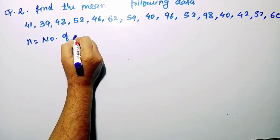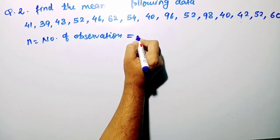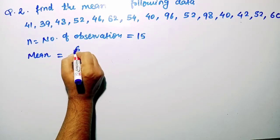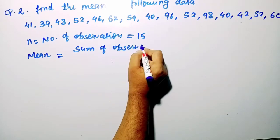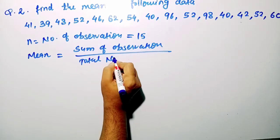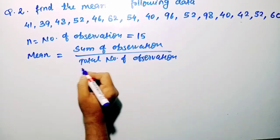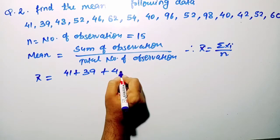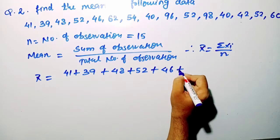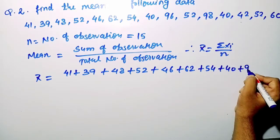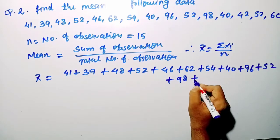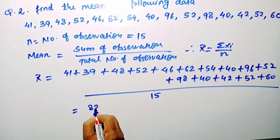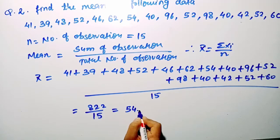For the next question, the total number of observations is 15. Using x̄ = Σxi / n, we add 41 + 39 + 48 + 52 + 46 + 62 + 54 + 40 + 96 + 52 + 98 + 40 + 42 + 52 + 60 = 822, divided by 15, giving a mean of 54.8.